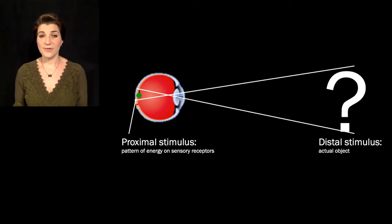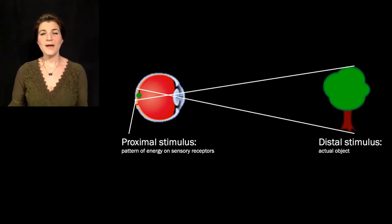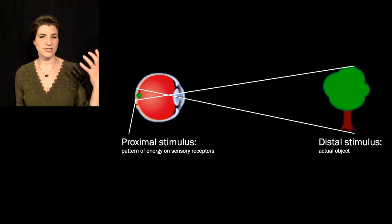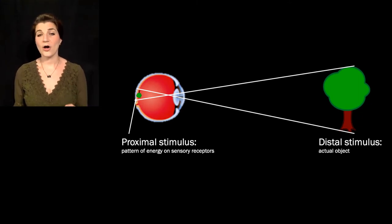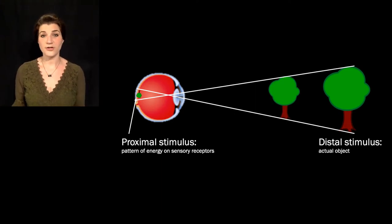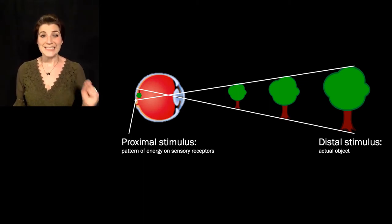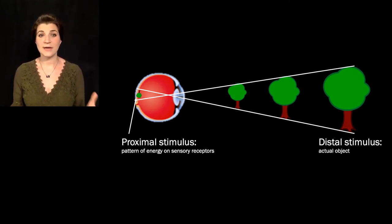The proximal stimulus includes the size on the retina—closer and larger objects take up more of the visual field—as well as location, color, and motion. That same proximal stimulus can be caused by a big tree far away, a slightly smaller tree somewhat closer, or a little bonsai tree really close. The activity on the retina can't distinguish between those stimuli. All those different distal stimuli result in the same proximal stimulus—so the proximal stimulus is ambiguous.